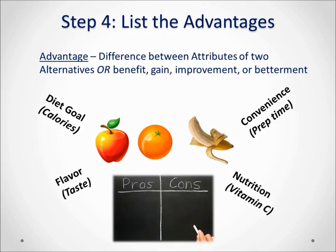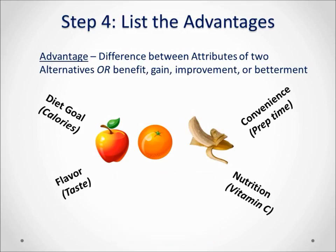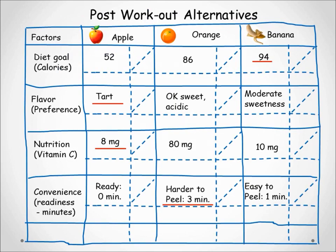Why are pros-and-cons type language not used? It may seem like a slight nuance, but a disadvantage of one alternative is really an advantage of another. The point is to keep the language used in CBA consistent. Back to our example: the orange has an 8-calorie advantage over the banana, and the apple has a 42-calorie advantage over the banana.